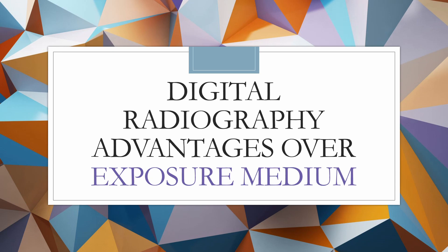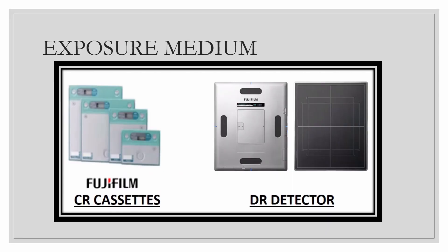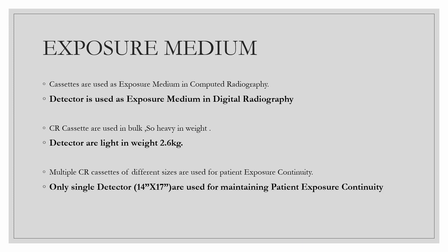Our topic is exposure medium — how we can say that digital radiography has more advantages over CR. We can see CR cassettes and DR detectors; this is a Fujifilm CR cassette and a Fujifilm DR detector. In CR, cassettes are used as the exposure medium, while in DR, detectors are used as the exposure medium.